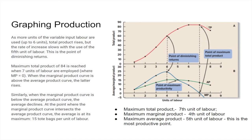We can see that maximum production point. For average product and marginal product, if we graph marginal product, what's important is where it crosses the average product line. The marginal product will always cross the average product line at the average product's highest point. As soon as marginal product falls below the average, it drags the average down. So the point of maximum productivity occurs where average product equals marginal product — that's an important concept.